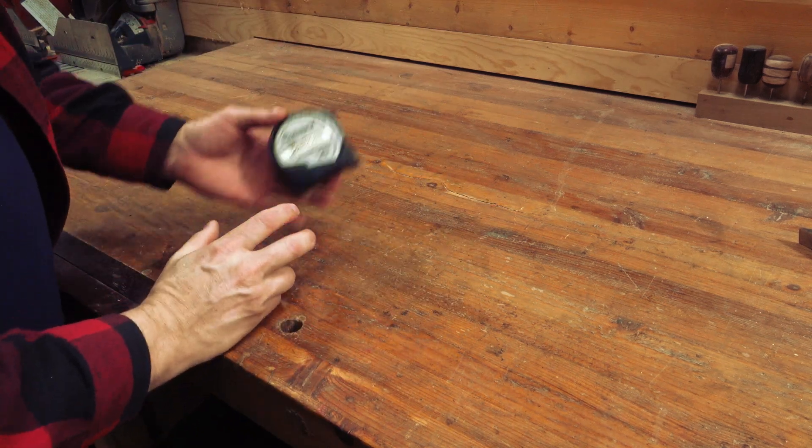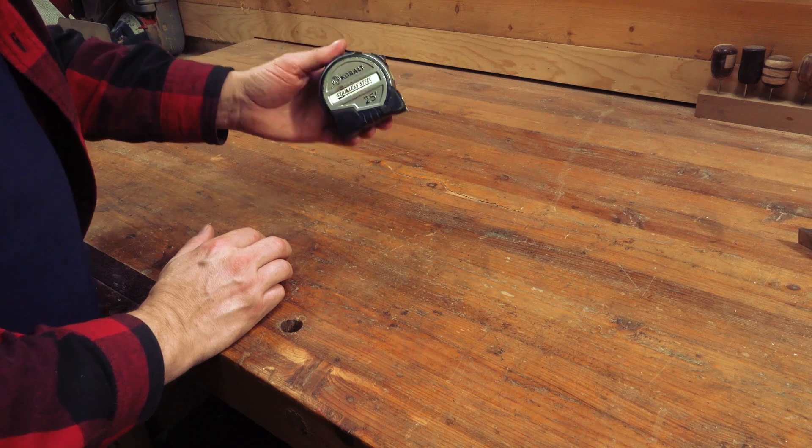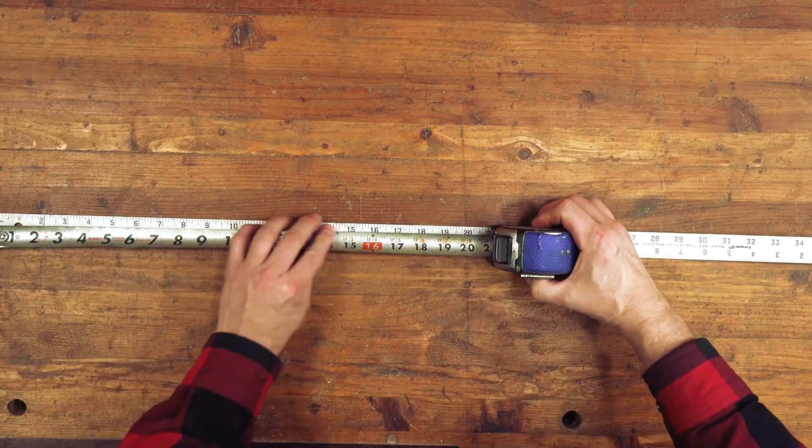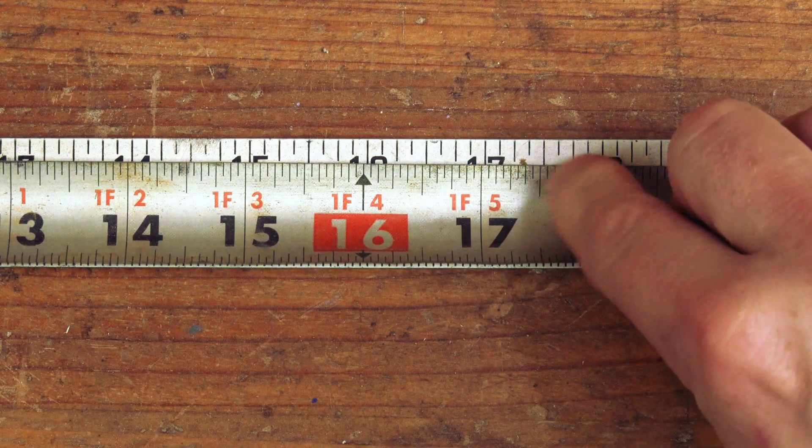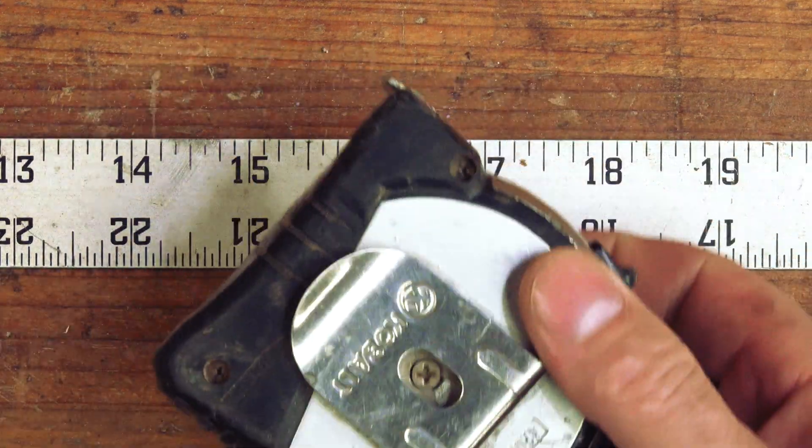One of the most important things every shop should have is an accurate way to measure things. For years I've used these tape measures, but they're very inaccurate. If I put this next to a yardstick and measure out the 17 inch mark, you can see I'm almost a 16th of an inch off. That's just not acceptable for a tape measure.